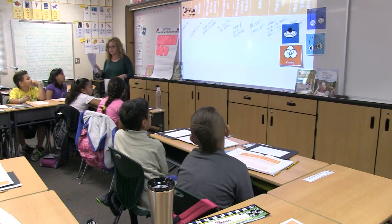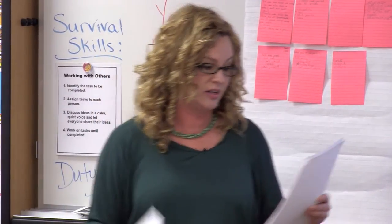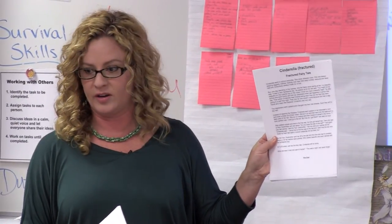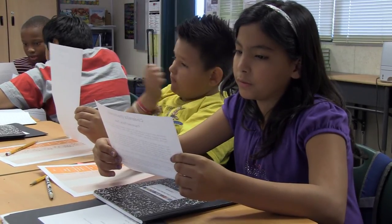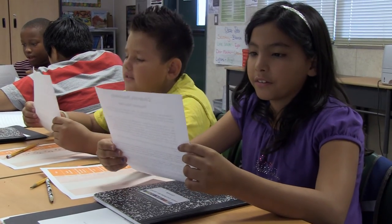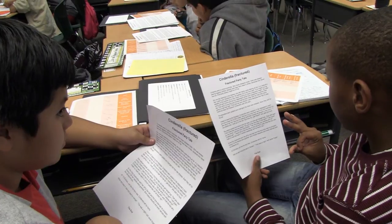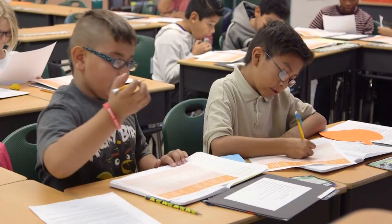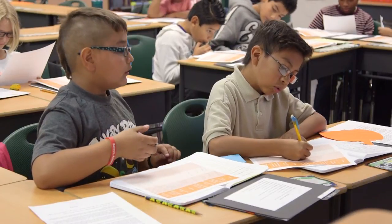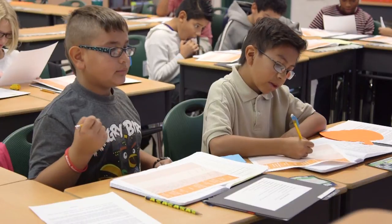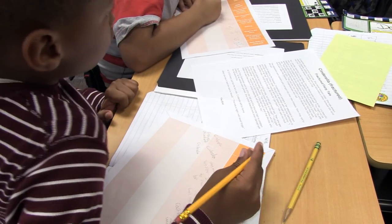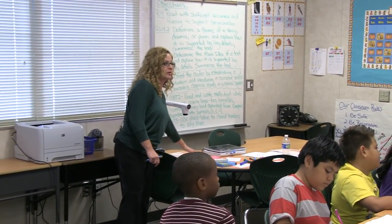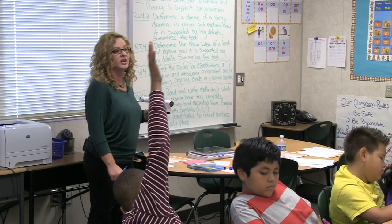The first one you can read is called Cinderfella — so instead of Cinderella, this is about a boy, so the character is changed. The other one — these are called Fractured Fairy Tales because they change part of it — is where Cinderella is at school. Main character switch. Who lives with the main character? The stepmother. What was different from the main story we read about Cinderella? What did the author change? What did they substitute?